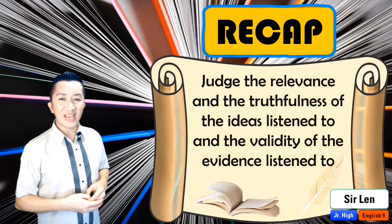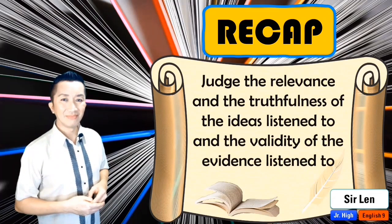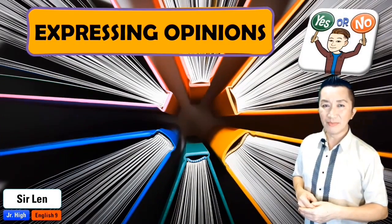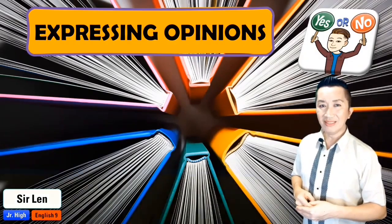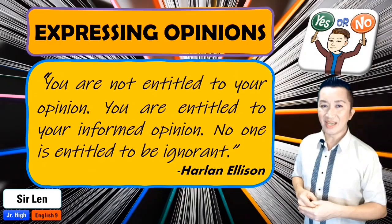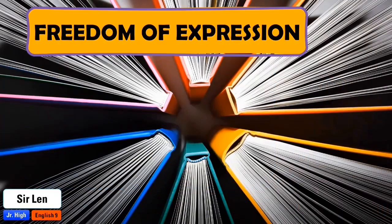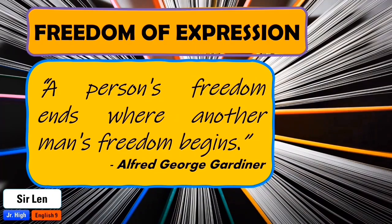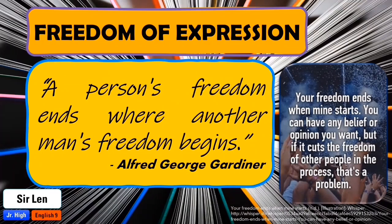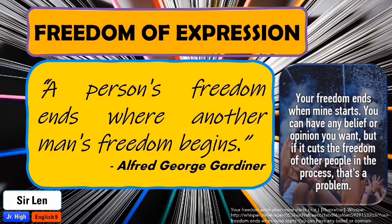Let us now have a recap of today's lesson. Expressing our opinion must be within the bounds and limitations of freedom of speech. Harlan Ellison once said, 'You are not entitled to your opinion. You are entitled to your informed opinion. No one is entitled to be ignorant.' According to Alfred George Gardner in his work Pebbles on the Seashore, a person's freedom ends where another man's freedom begins. Your freedom ends where mine starts. You can have any belief or opinion you want, but if it cuts the freedom of other people in the process, that's a problem.